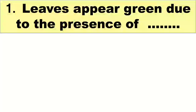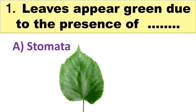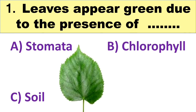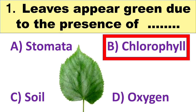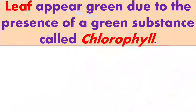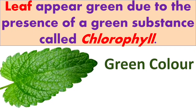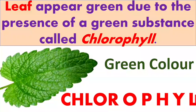The first question is: leaves appear green due to the presence of blank. Your options are A. Stomata, B. Chlorophyll, C. Soil, and D. Oxygen. Think about the answer. The right answer is Chlorophyll. Leaves appear green due to the presence of a green substance called chlorophyll.